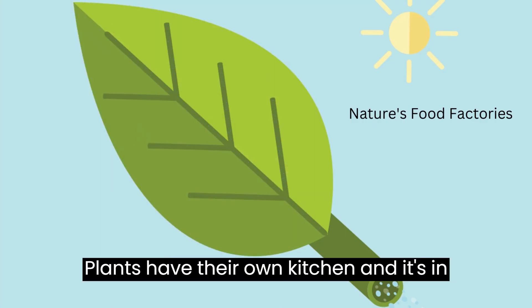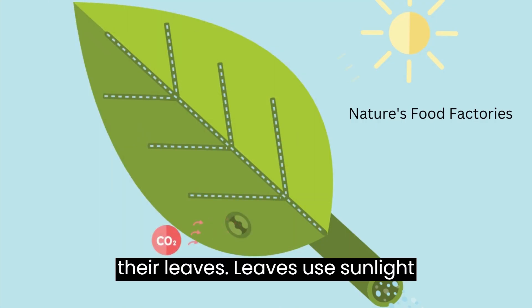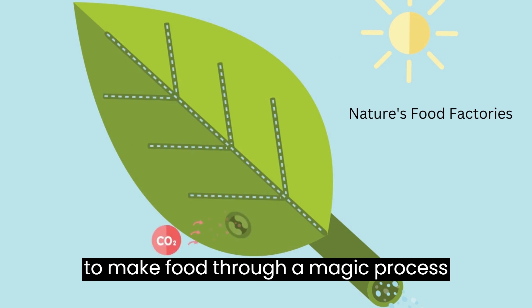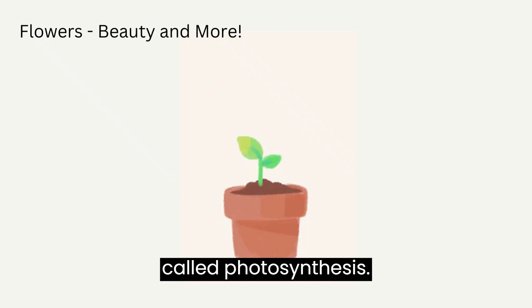Plants have their own kitchen, and it's in their leaves. Leaves use sunlight to make food through a magic process called photosynthesis.